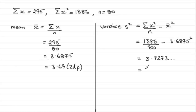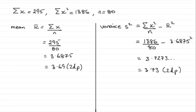We need to round this to two decimal places, which gives 3.73 to two decimal places. So that's that particular section done.